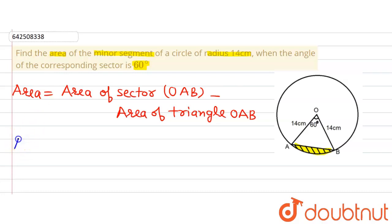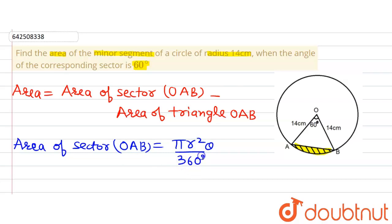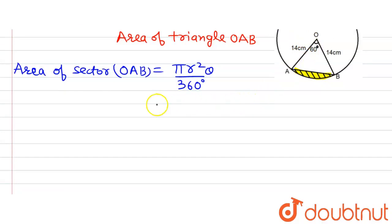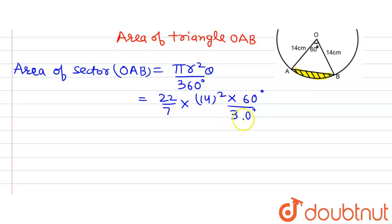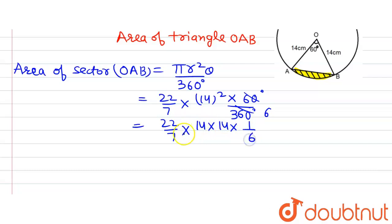The area of sector OAB equals πR²θ/360°. Here, radius R = 14 cm. Substituting: (22/7) × 14² × (60/360) = (22/7) × 14 × 14 × (1/6). The 14 divides with 7 to give 2, and further simplification gives 308/3 cm². This is the area of sector OAB.